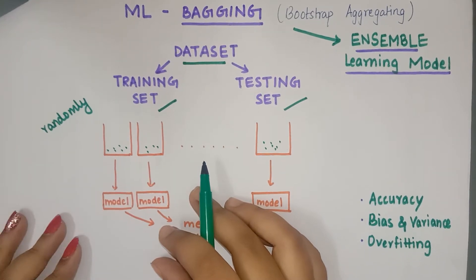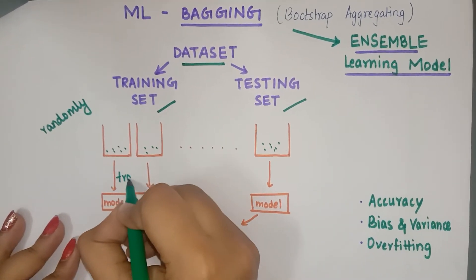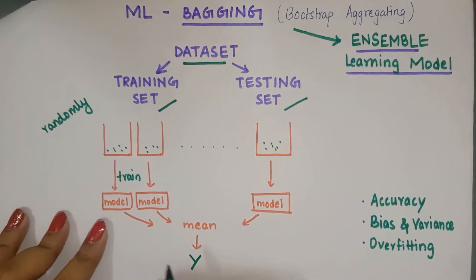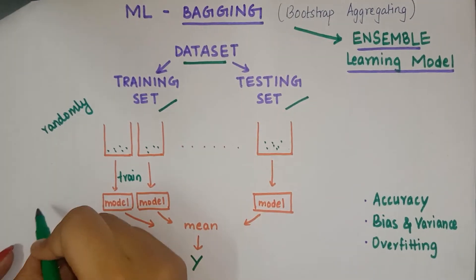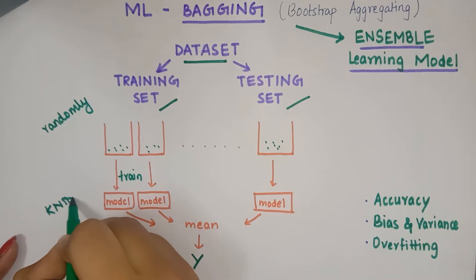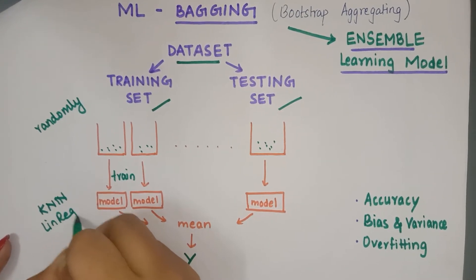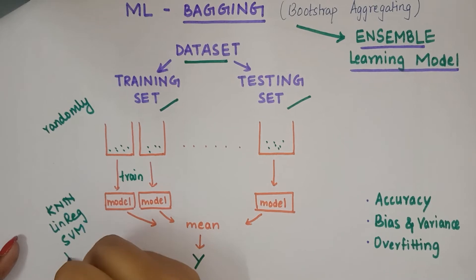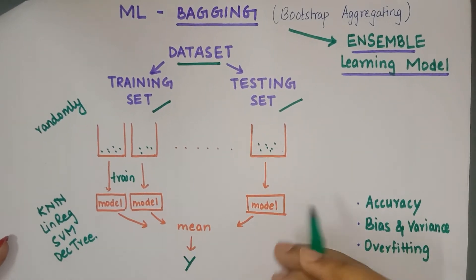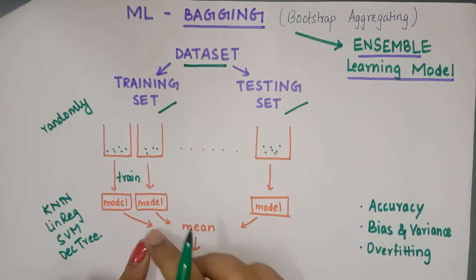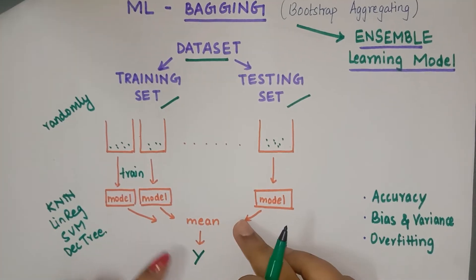Each of the bags is trained using a model, and each of these models is different — it can be KNN, linear regression, SVM, decision tree, or various other models. The output from each model is then averaged to get the final prediction.